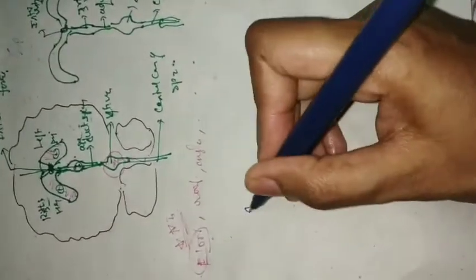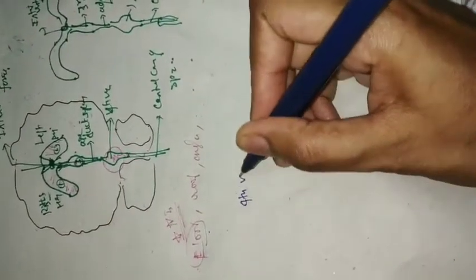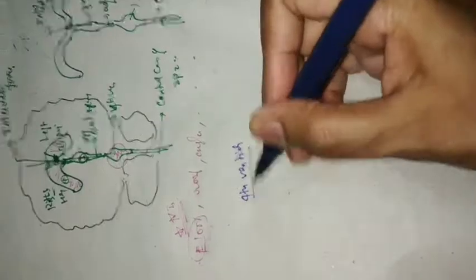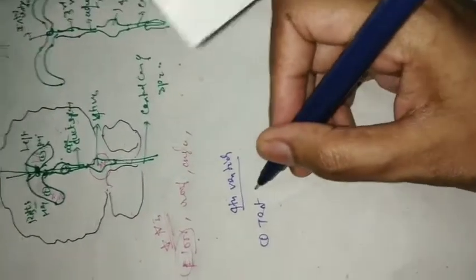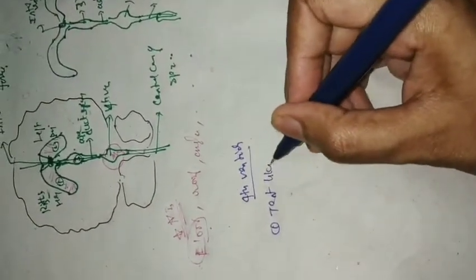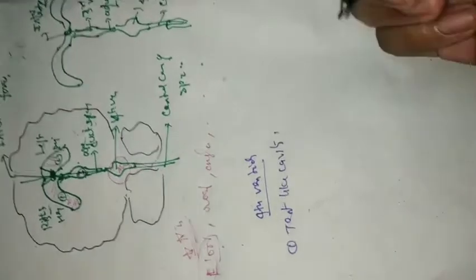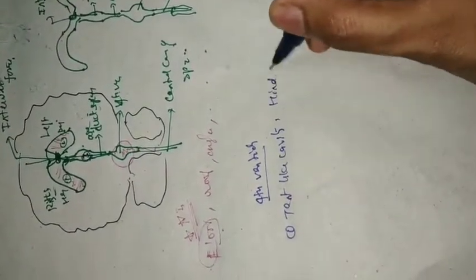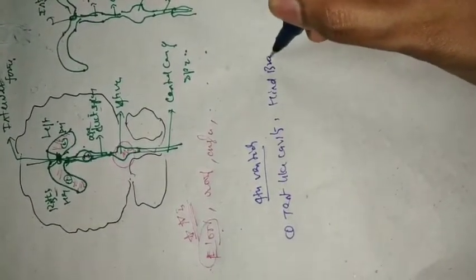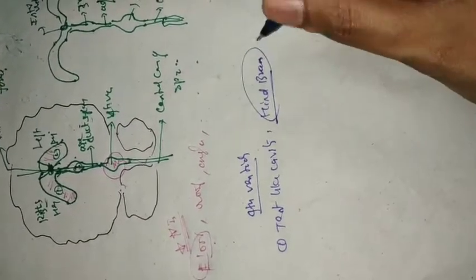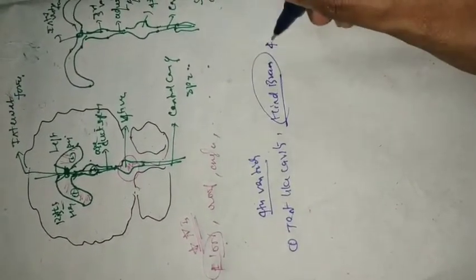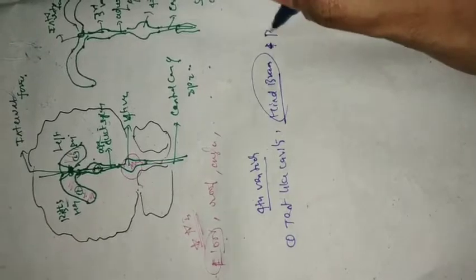The fourth ventricle is a dent-like cavity, and you will see this in the hindbrain, which is present in the posterior cranial fossa.